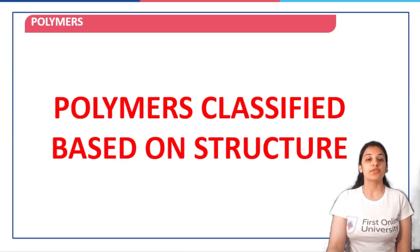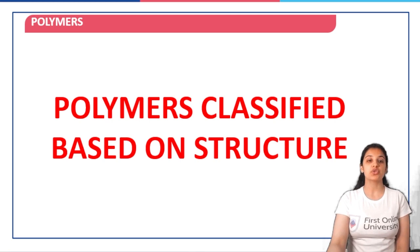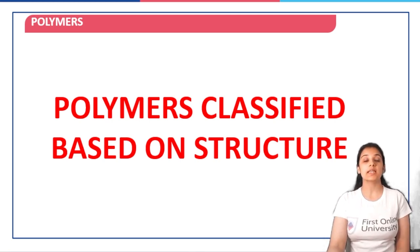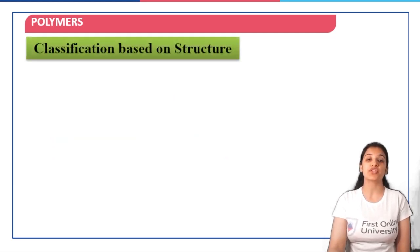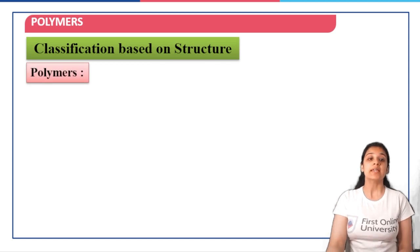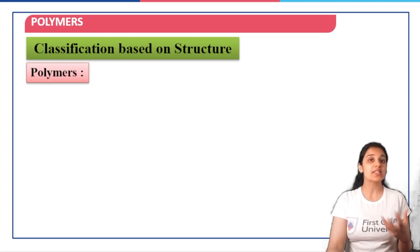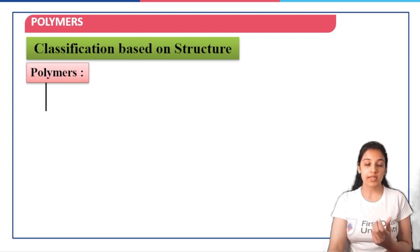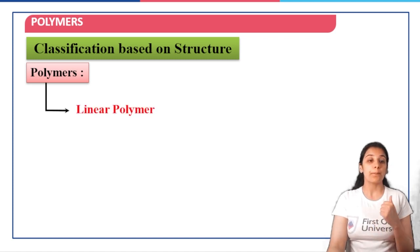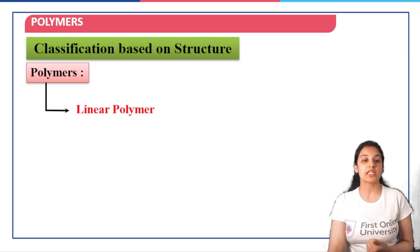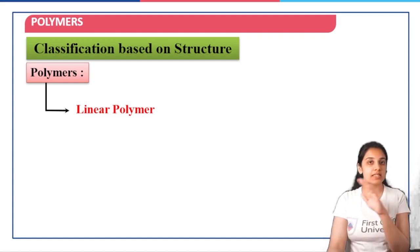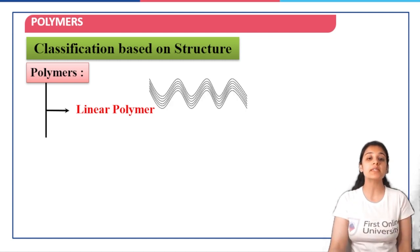The first thing that we need to talk about when we are discussing the polymers classified based on their structure is what are the various structures that the polymers can actually get. Based on their structure, polymers can be classified into linear polymers — as is clear from the name itself, these are going to be straight chain polymers.